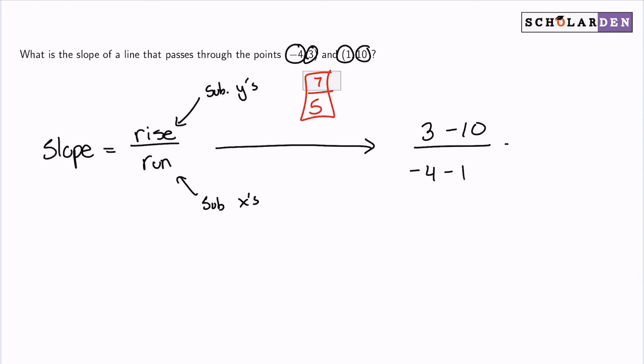From there, I'll receive negative 7 divided by negative 5. Both of these are negative, so I can reduce this to positive 7 fifths.